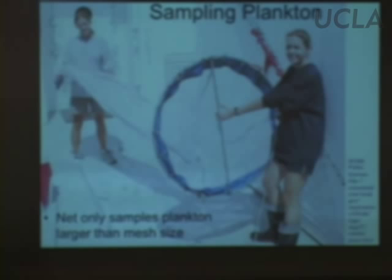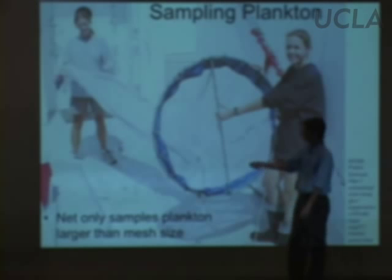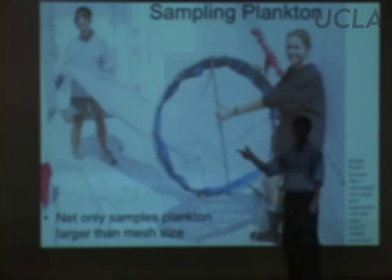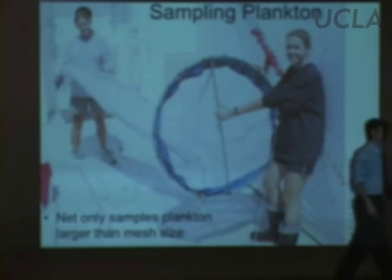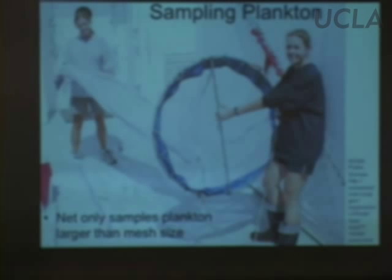You can only catch organisms if they're about as big as the holes in the net or larger. A very tiny organism might just pass right through. So this method of sampling plankton is inherently incomplete — you'll get bigger plankton and more common plankton, but you may miss some of the smaller organisms.